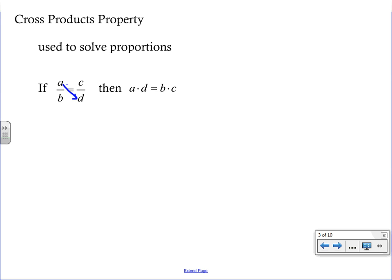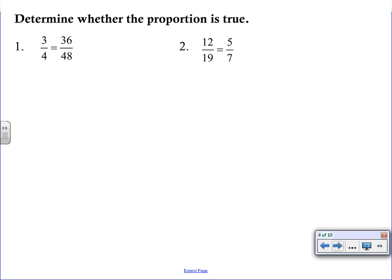When you cross multiply, you take a times d, and then you cross multiply in the other direction, b times c, and those two products will be equal. Remember, that only works if you have a proportion.